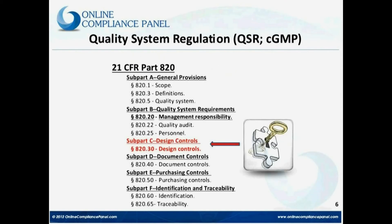Now let's look at the components, parts and sections under 21 CFR Part 820. Since this is a part, there are subparts A, B, C, and so on. Today we are going to focus on 21 CFR Part 820, Subpart C, design control — in particular Section 820.30, which is design control.